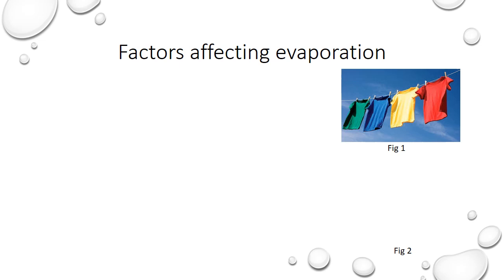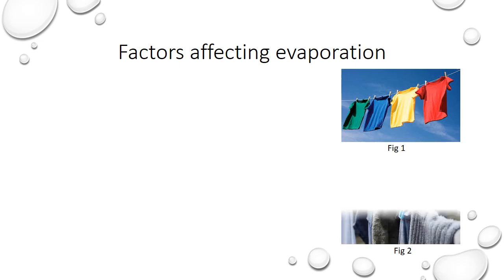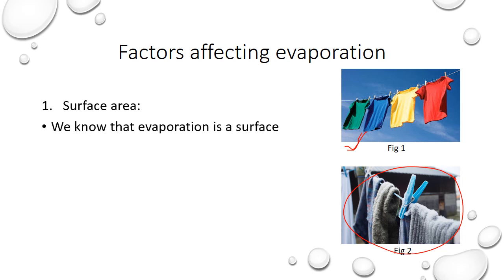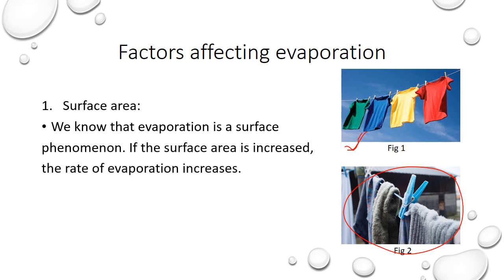Let me explain surface area with the help of this example. Whenever we are drying clothes, we prefer to spread them out. We prefer to put our clothes for drying in this manner rather than what you see in the second figure. That is because we are trying to increase the surface area. We already know that evaporation is a surface phenomenon, so if the surface area is increased, the rate of evaporation increases.